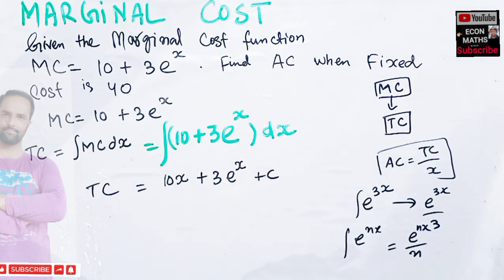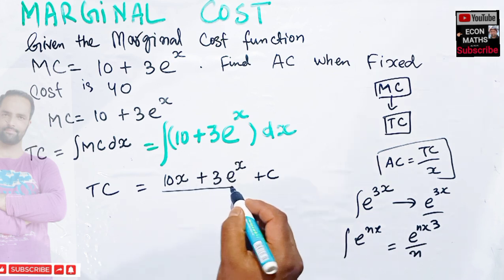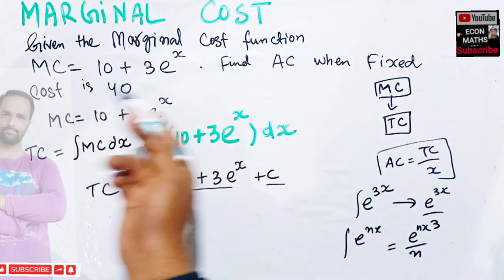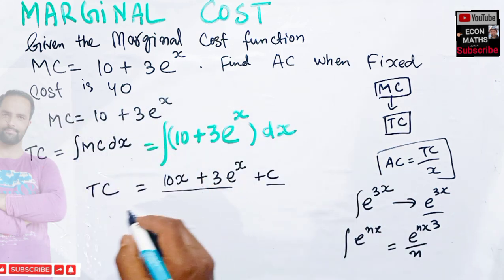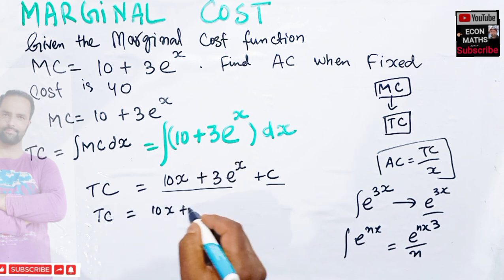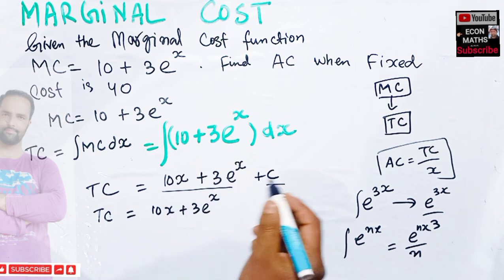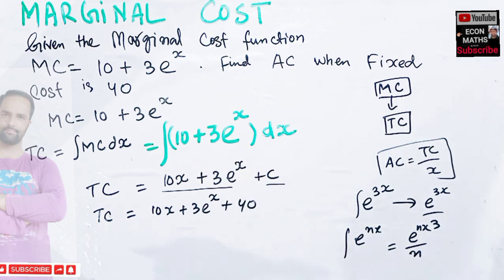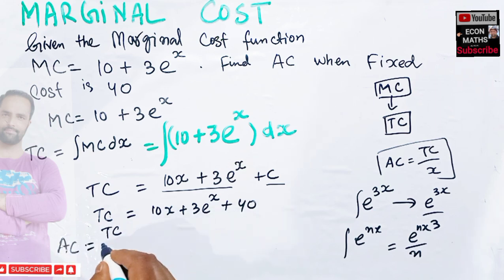This constant of integration denotes our fixed cost, and the fixed cost is given as 40. So we can write our total cost as 10x + 3e^x + 40.